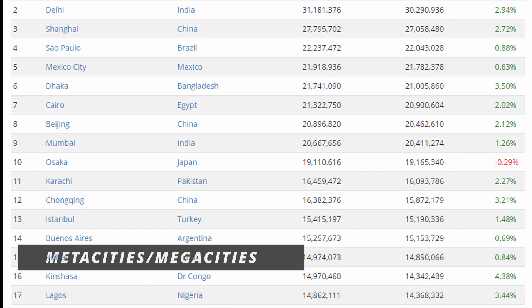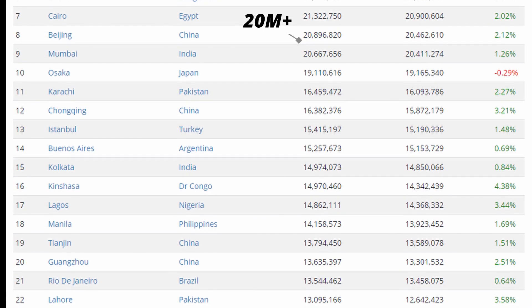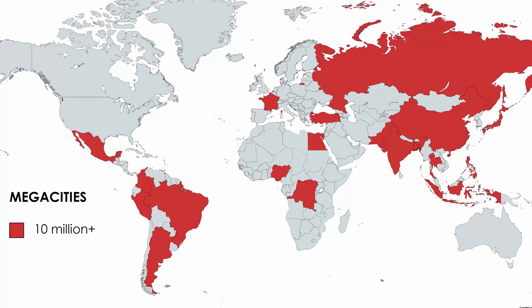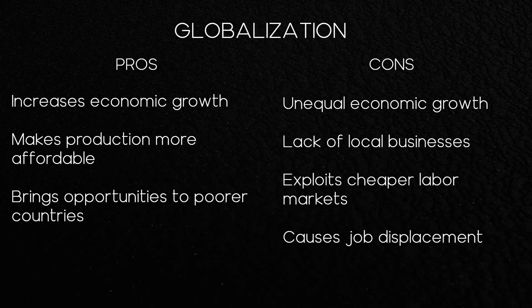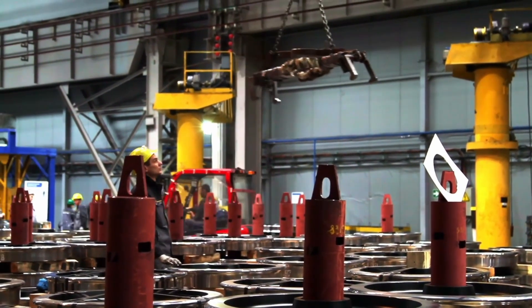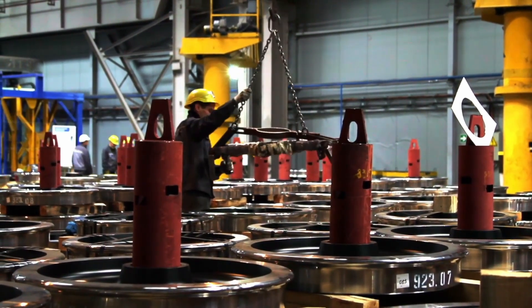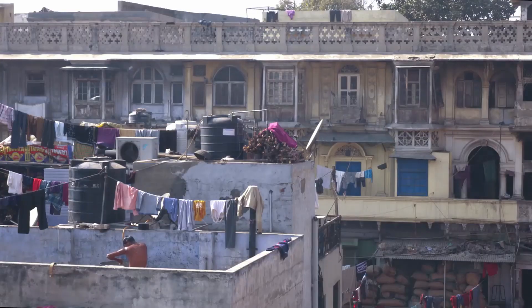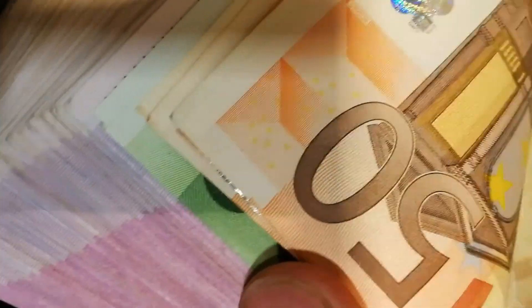Two concepts you're also responsible for are megacities and metacities. Metacities include cities with a population of 20 million or more, and megacities include cities with a population of 10 million or more. The course description emphasizes the interconnectedness and globalization these cities are experiencing, and the fact that you're seeing them more and more in the semi-periphery and periphery regions of the world. Globalization increases economic growth by bringing jobs to countries and making production more affordable — but it also causes the rich to get richer and the poor to get poorer as corporations decimate local businesses and exploit cheap labor markets.